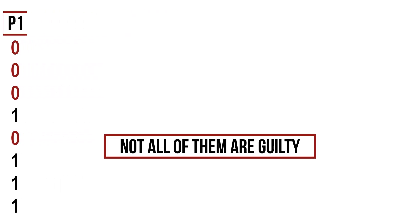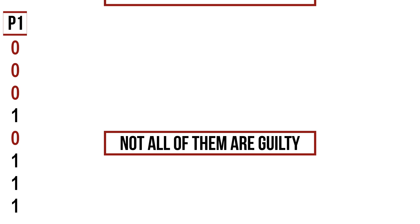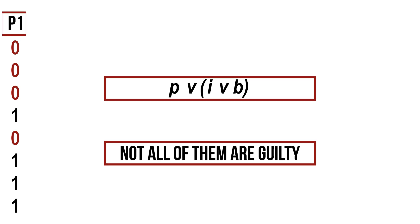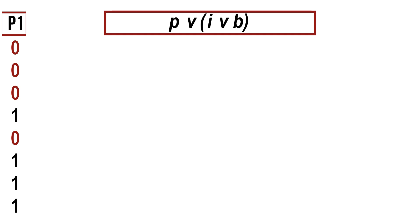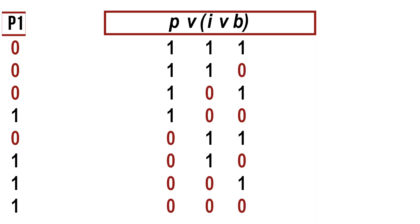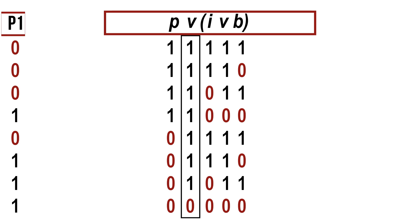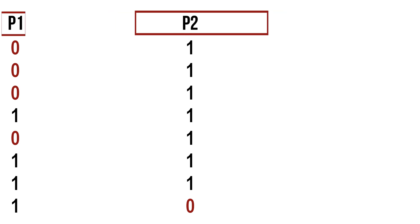The second premise is that not all of them are guilty. We translate this by expressing that either Philip is innocent, Irene is innocent, or Bob is innocent, with brackets to make it well-formed. We assign truth values in the same order as premise one, evaluate I or B, and finally the entire formula. We keep this evaluation aside and continue with the next premise.